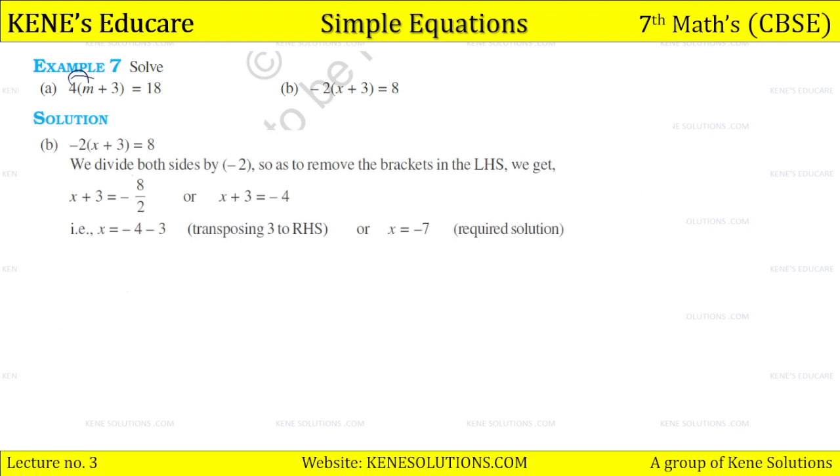Next, look here: minus 2 in bracket times x plus 3 equals 8. We divide both sides by minus 2 first to remove the brackets in the LHS. We get x plus 3 equals minus 8 by 2, or x plus 3 equals minus 4, because 2 fours are 8. So x equals minus 4 minus 3, transposing plus 3 to the RHS, which becomes minus 3. So x equals minus 7, the required solution. To check, LHS equals minus 2 in bracket minus 4, which gives 8, equal to the RHS.